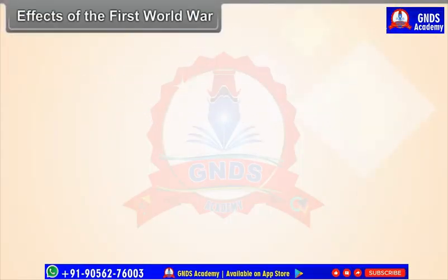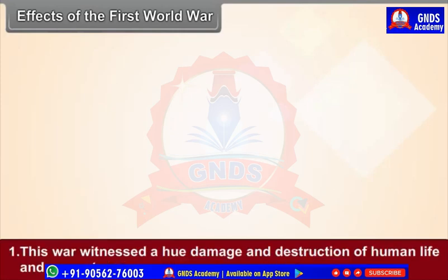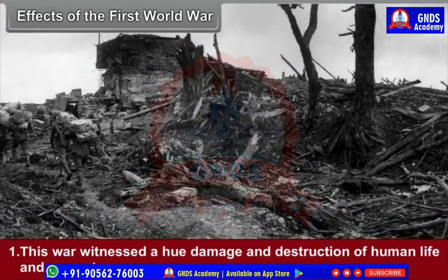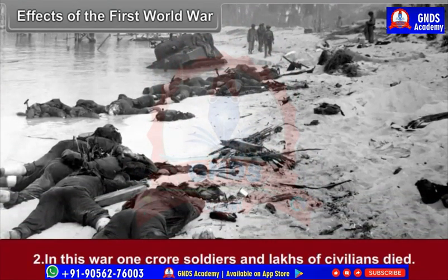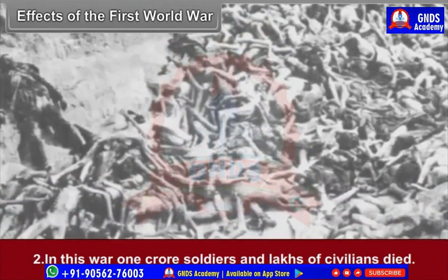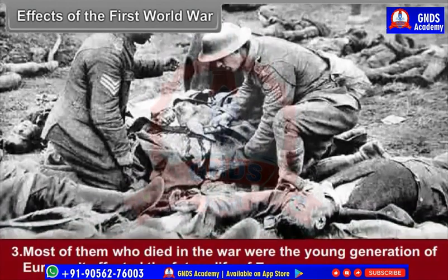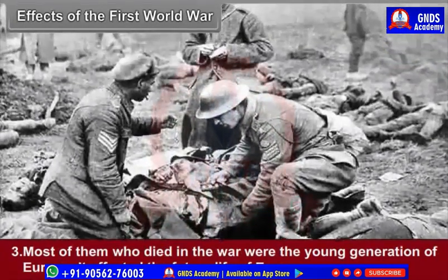Effects of the First World War (1914–1918): First, this war witnessed huge damage and destruction of human life and property. Second, in this war, one crore soldiers and lakhs of civilians died. Third, most of those who died were the young generation of Europe, which affected the future life of Europe.